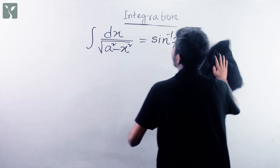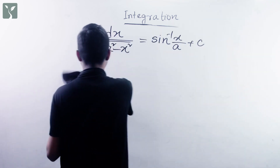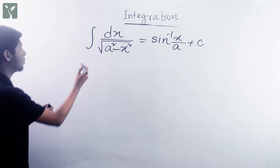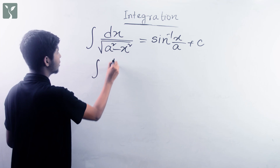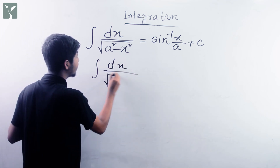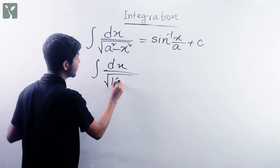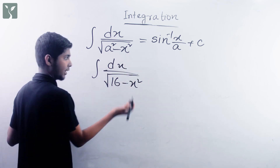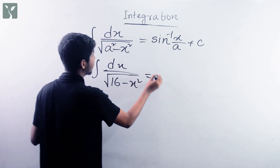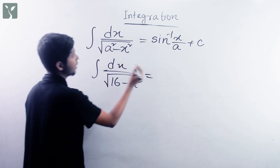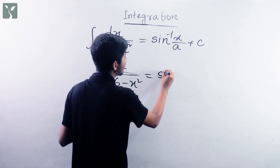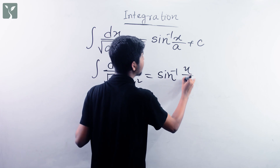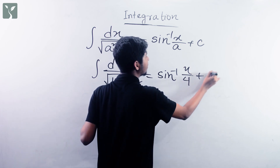All right. Example problem number one: integration of dx by root over 16 minus x square. Here a square is 16, so a is 4. The answer is sin inverse x by 4 plus c.